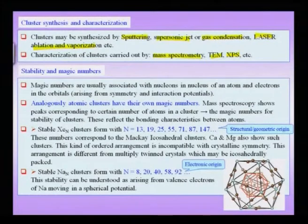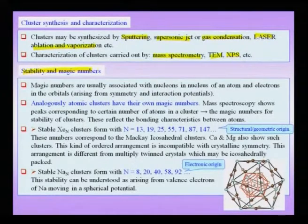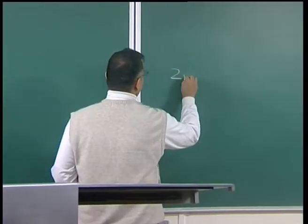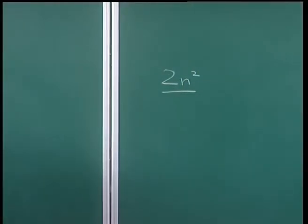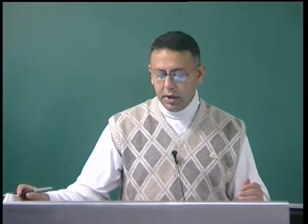We had been mentioning about the stability of certain numbers of atoms, ions or molecules in a cluster. So let us see what is the origin of this stability and what kind of numbers we encounter when talking about these magic numbers. Magic numbers are usually associated with nucleons in the nucleus of an atom and the electrons in the orbitals. For instance, an s orbital can hold two electrons, p orbital six, and we have the formula 2n² for a particular shell.